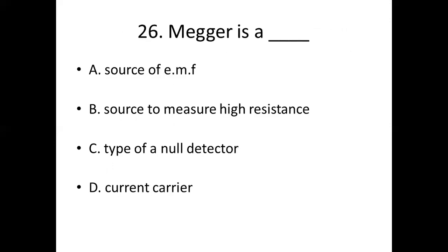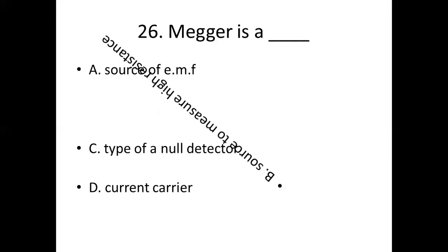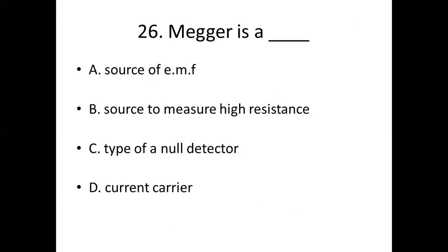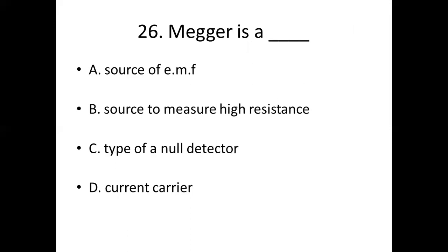26th bit. Megger is a dash. Option A: source of EMF. Option B: source to measure high resistance. Option C: type of a null detector. Option D: current carrier. Answer: Option B, source to measure high resistance.